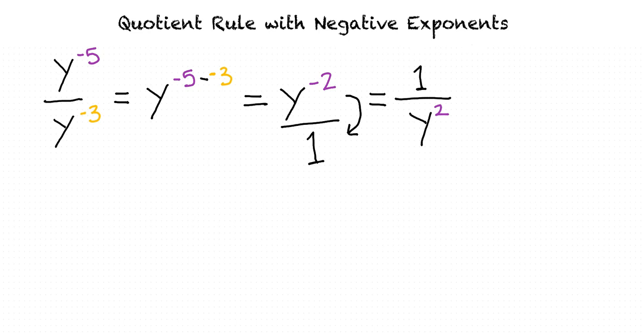So let me make sure I understand. If we have a variable raised to an exponent divided by the same variable raised to an exponent, we can express that as the variable raised to the difference of the two exponents. You got it.